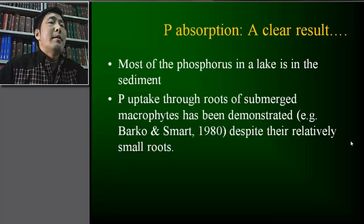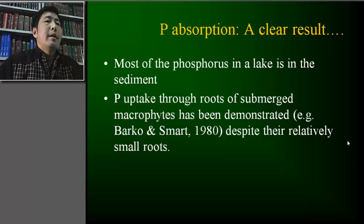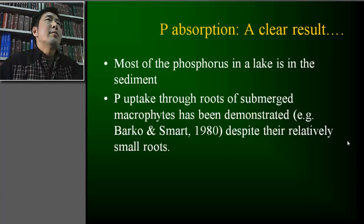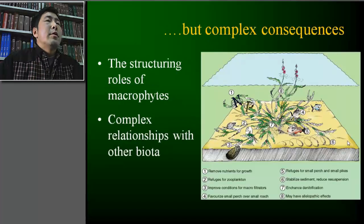Phosphorus is also a necessary element for normal macrophyte life. In lakes, most of the phosphorus is in the sediment, where anoxic conditions frequently occur. Macrophytes still need phosphorus for their normal life. Many macrophytes, especially submerged macrophytes, usually have very small roots, but direct phosphorus absorption through their root system has been demonstrated by several classical experiments.